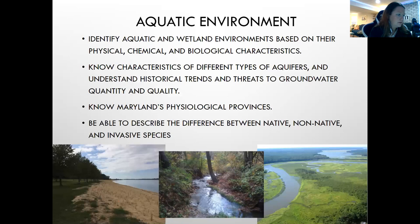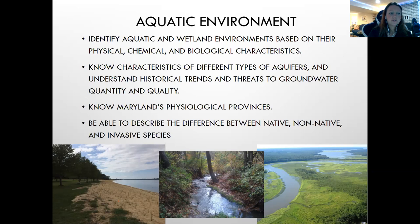Now we're on to the aquatic environments section. You need to be able to identify aquatic and wetland environments based on their physical, chemical, and biological characteristics. Know the characteristics of different types of aquifers, understand historical trends and threats to groundwater quantity and quality, and definitely know Maryland's physiographic provinces and be able to describe them.